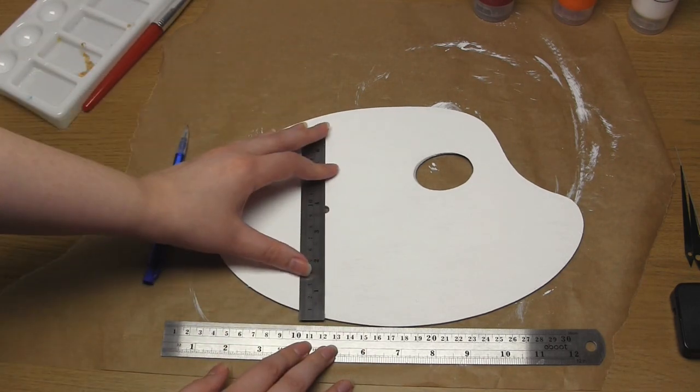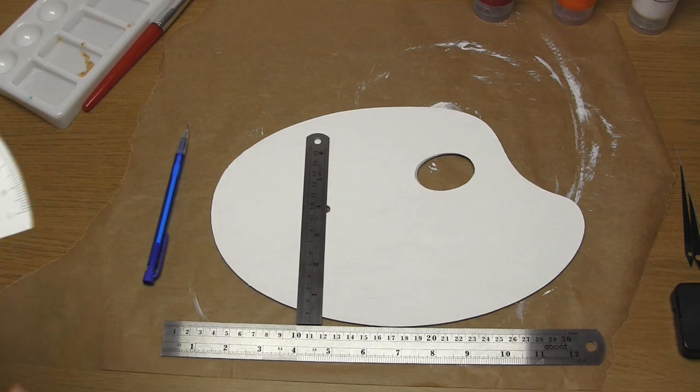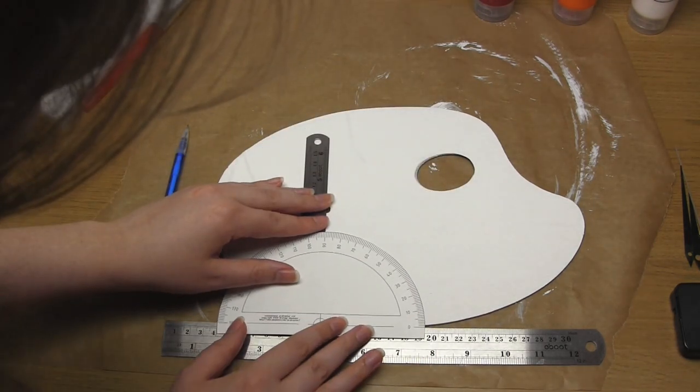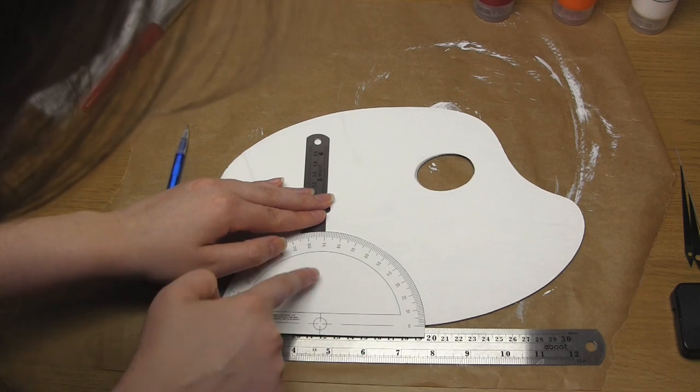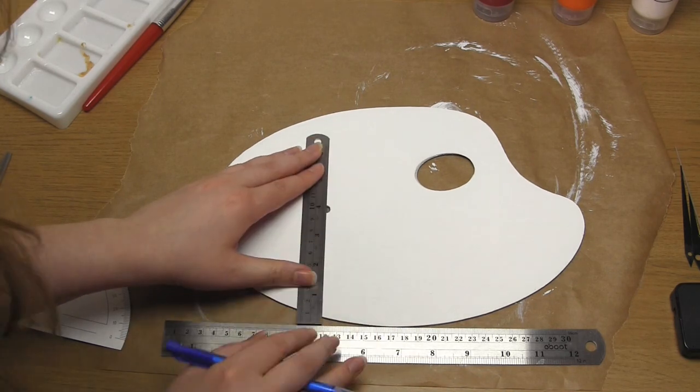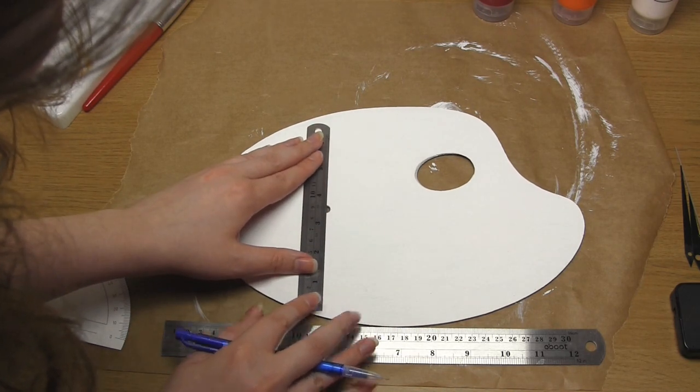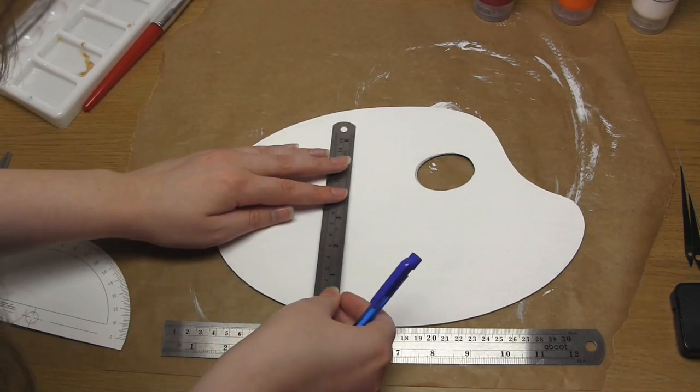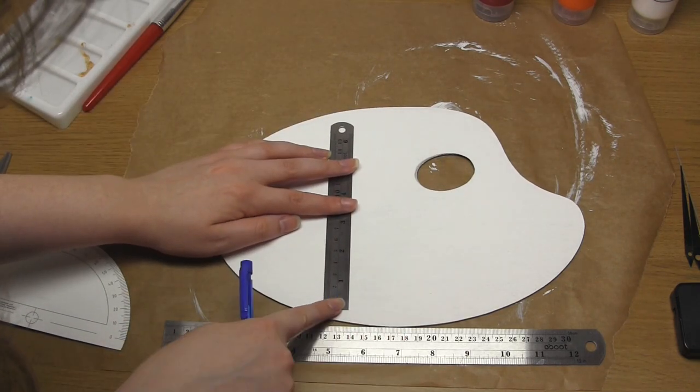Then place another ruler at 90 degrees to this ruler, making sure it also lines up with the hole that you've drilled. Then make very faint pencil marks along the edge of this ruler, one at the top and one at the bottom. These small marks need to line up with the drilled hole and they will represent the numbers 12 and 6 on the clock.